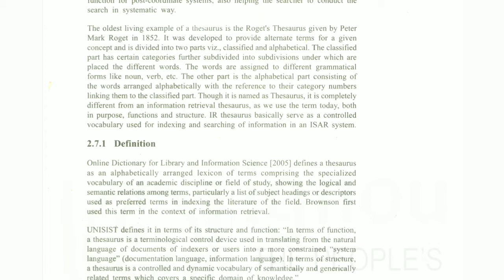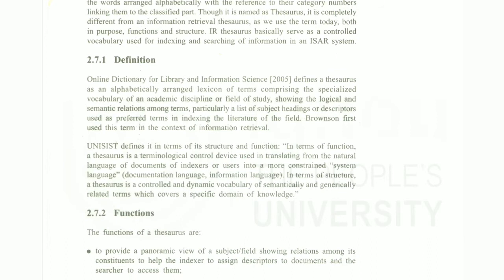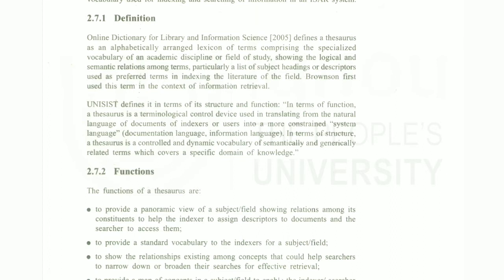The classified part has certain categories further sub-divided into subdivisions under which different words are placed. The Holland Dictionary for Library and Information Science defines a Thesaurus as an alphabetically arranged lexicon comprising the specialized vocabulary of an academic discipline or field of study, showing the logical and semantic relations among terms — particularly a list of subject headings or descriptors used as preferred terms in indexing the literature of a field.